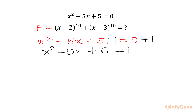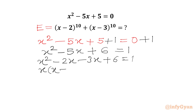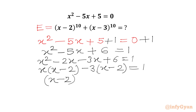Now we can factorize the LHS. The factors of 6 are 2 and 3, so we can split the middle term -5x as -2x - 3x. So x² - 5x + 6 = (x)(x - 2) - 3(x - 2) = 1. Taking (x - 2) common, we get (x - 2)(x - 3) = 1.